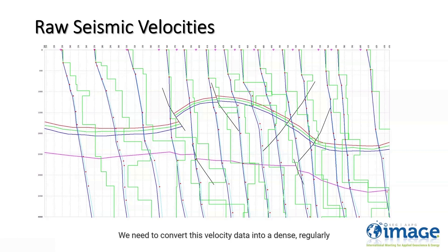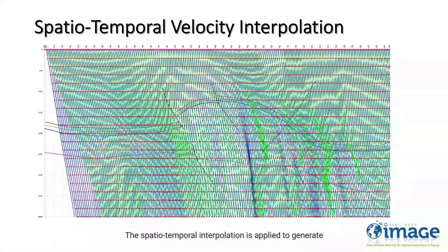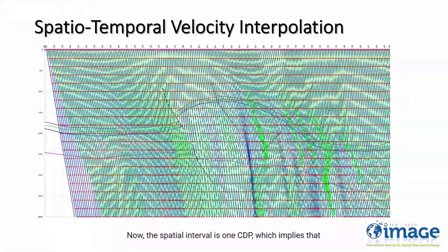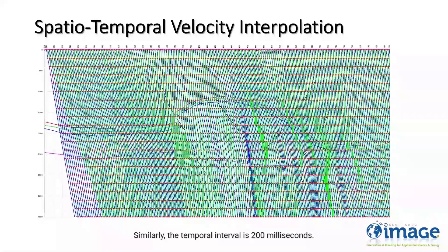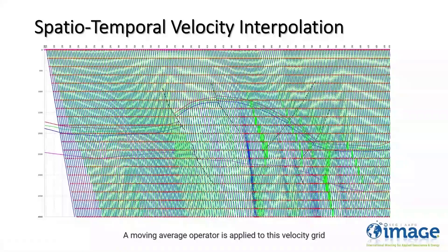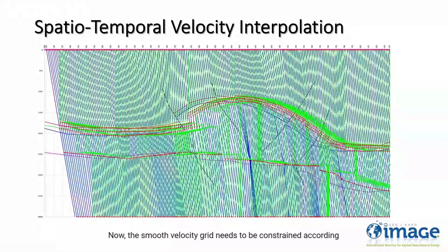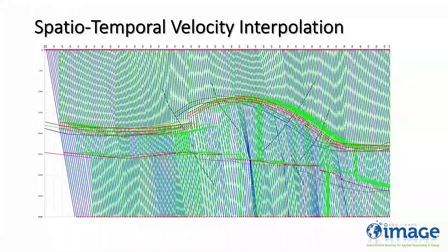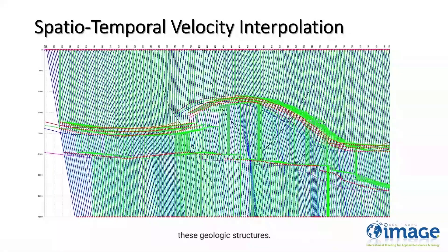We need to convert this velocity data into a dense regularly spaced velocity grid. Thus spatiotemporal interpolation is applied to generate a velocity grid from the irregularly spaced velocity data. The spatial interval is 1 CDP, which implies that a velocity function has been generated for each CDP. Similarly, the temporal interval is 200 ms, that is the velocity node is generated after every 200 ms. A moving average operator is applied to this velocity grid to remove any unwanted spikes in the data. The smooth velocity grid then needs to be constrained according to the geologic structures. Therefore, horizon-based velocity interpolation is applied, and now the velocity nodes follow the geologic structures so the interval velocities represent these geologic structures.